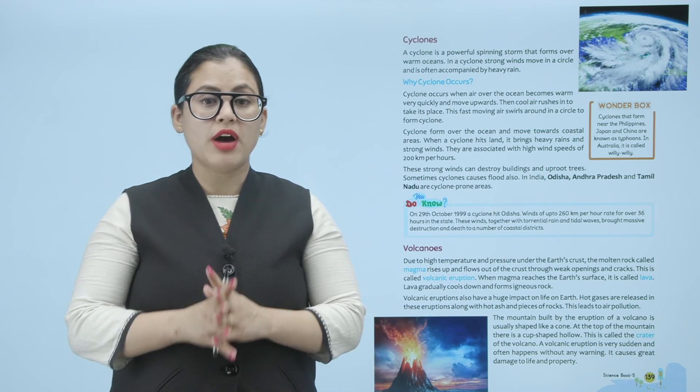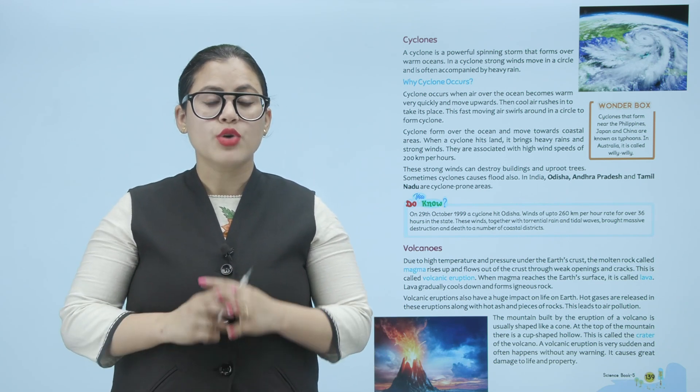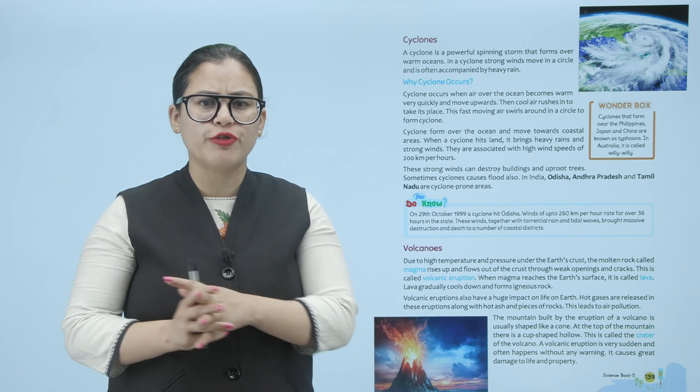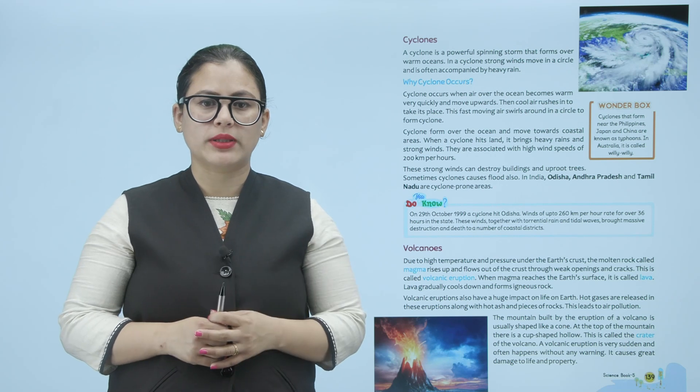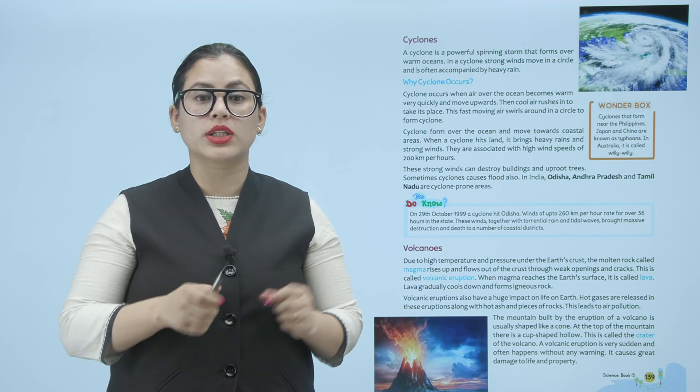Cyclones: a cyclone is a powerful spinning storm that forms over warm oceans. In a cyclone, strong winds move in a circle and it is often accompanied by heavy rain. Cyclones hamesha oceans mein hoti hain — ye powerful spinning storm hota hai jo warm oceans ke upar banta hai. Cyclone mein strong winds ek circular form mein blow karti hain, aur uske saath heavy rain bhi hoti hai.